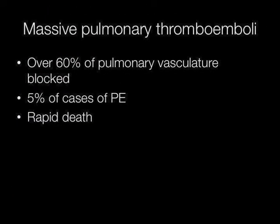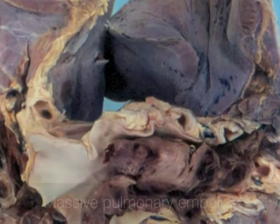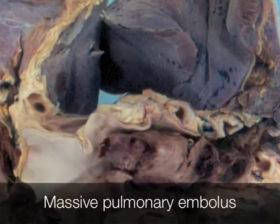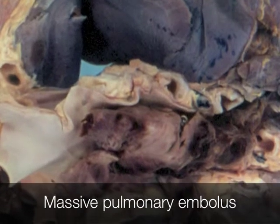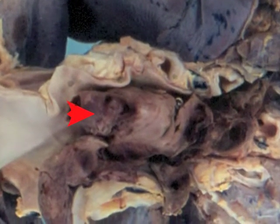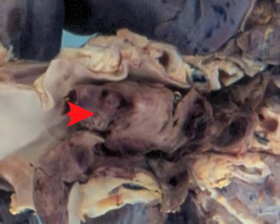In massive pulmonary thromboembolism, over 60% of the pulmonary vasculature is blocked. This causes rapid death but only accounts for approximately 5% of cases of pulmonary thromboembolism. This is an example of massive pulmonary thromboembolism. The thrombus occludes the proximal pulmonary artery in this lung.